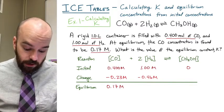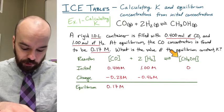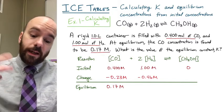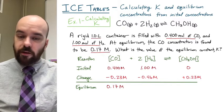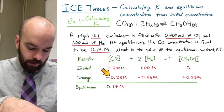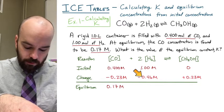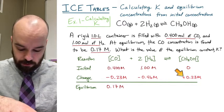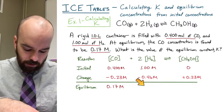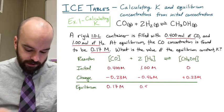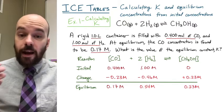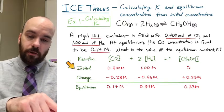For methanol, it has a coefficient of one, so it matches carbon monoxide one-to-one. But instead of being negative, methanol increases, giving a positive 0.23 molar change. Then we can add the initial and change rows to find the equilibrium row: 1.0 plus negative 0.46 gives 0.54 molar for H2, and zero plus 0.23 gives 0.23 molar for methanol. Now we know all equilibrium concentrations thanks to our ICE table.